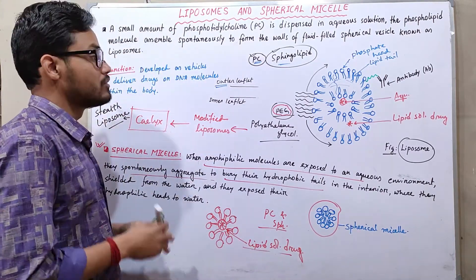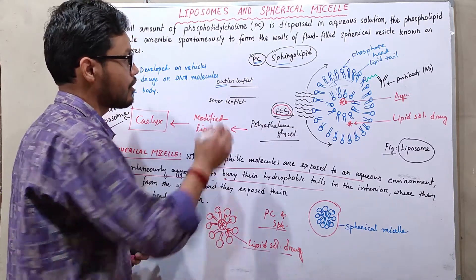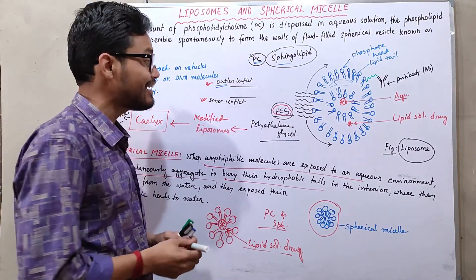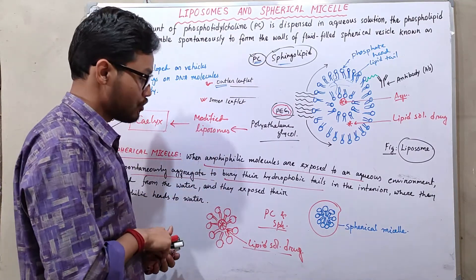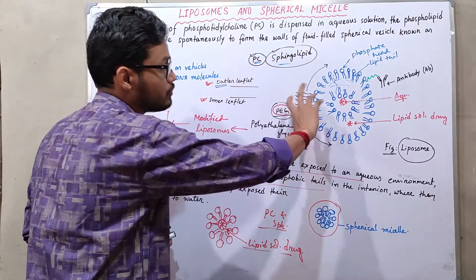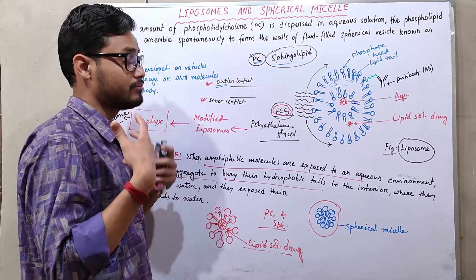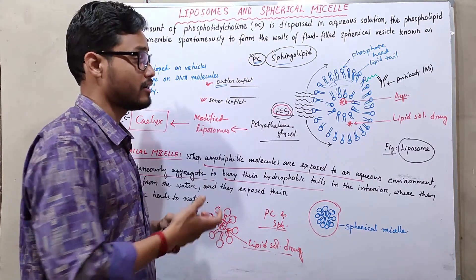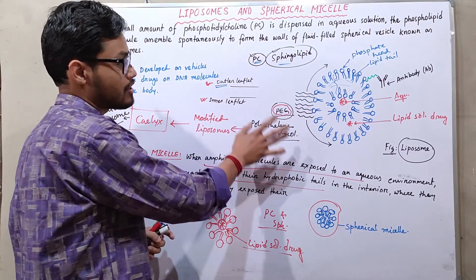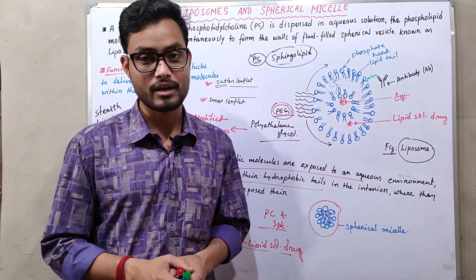In micelles, only lipid-soluble drugs can be delivered because there is no aqueous compartment inside. In contrast, liposomes have a double-layered structure with both an outer and inner leaflet, allowing delivery of both aqueous and lipid-soluble drugs. This is the key difference between liposomes and micelles. I hope you liked this video — please hit the like button, subscribe, and thanks for watching.